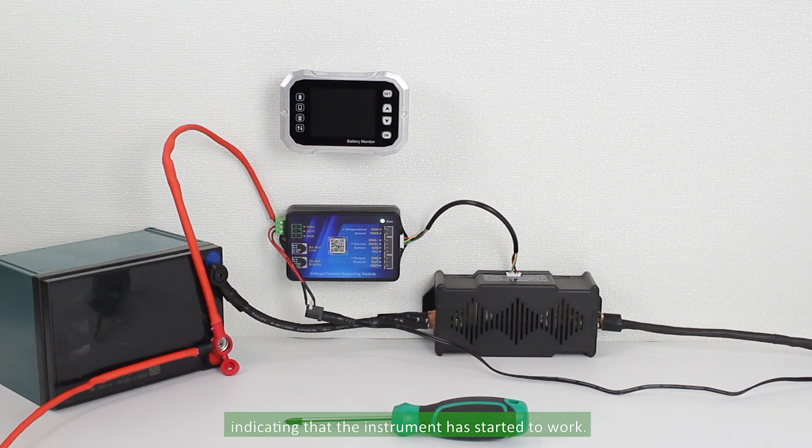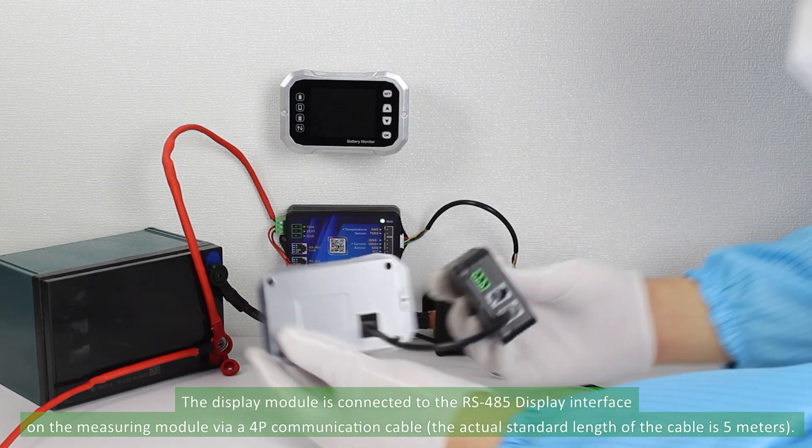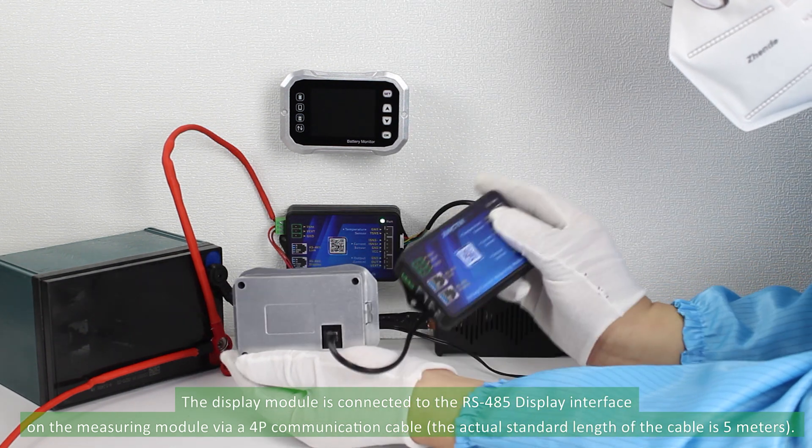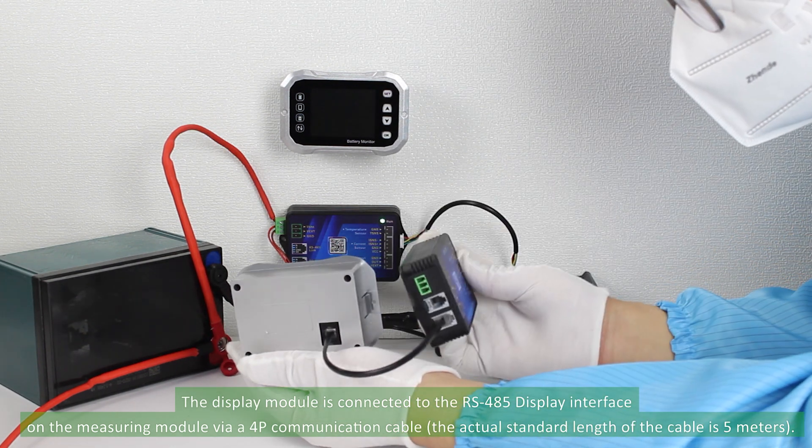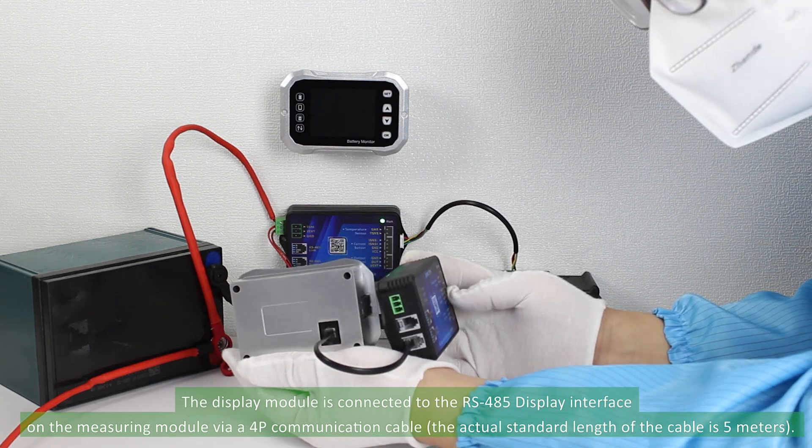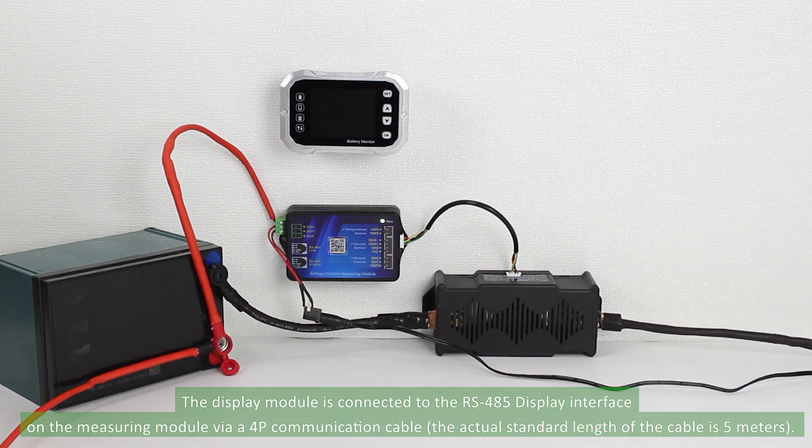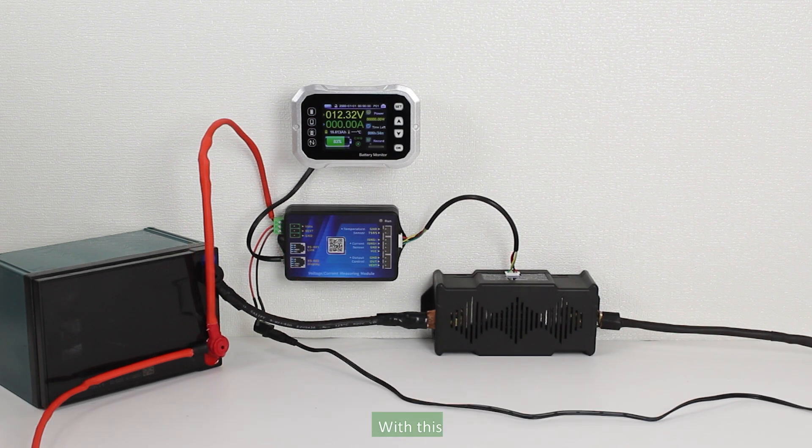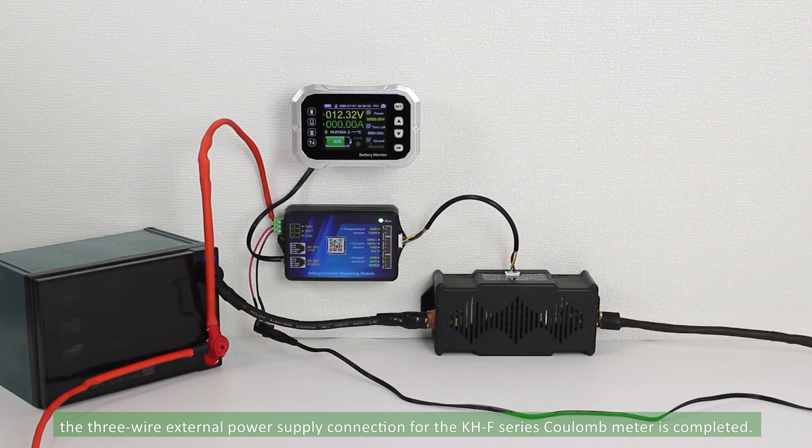The display module is connected to the RS485 display interface on the measuring module via a 4P communication cable. The actual standard length of the cable is 5 meters. With this, the three-wire external power supply connection for the KHF series Coulomb meter is completed.